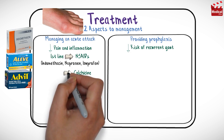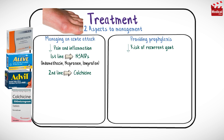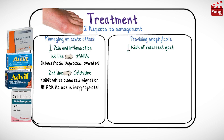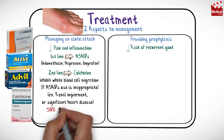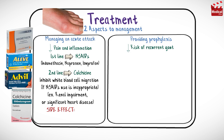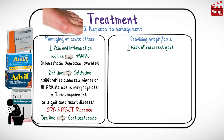Colchicine is a second-line option; it has anti-inflammatory effects by inhibiting white blood cell migration. Colchicine is used in patients where non-steroidal anti-inflammatory medication would be inappropriate, such as patients with renal impairment or significant heart disease. A very common side effect of colchicine is gastrointestinal upset, particularly diarrhea. The third-line option, where both of the above fail, is to consider using corticosteroids.